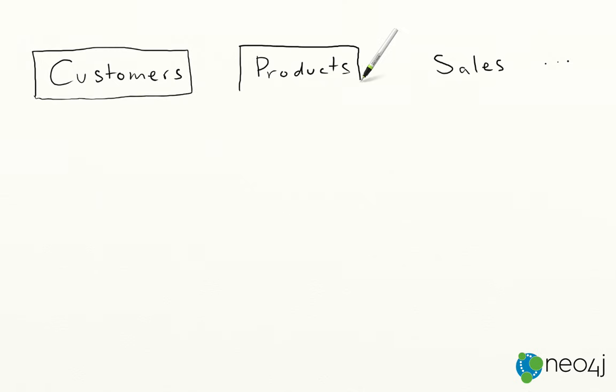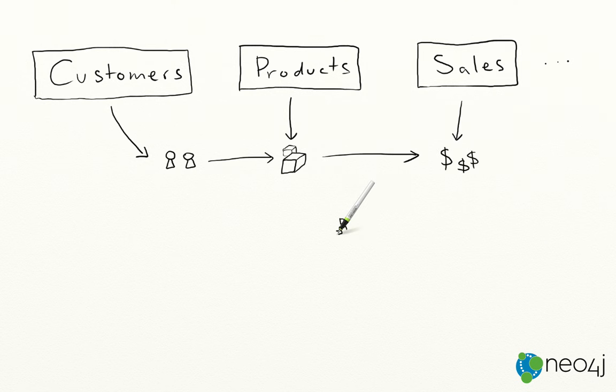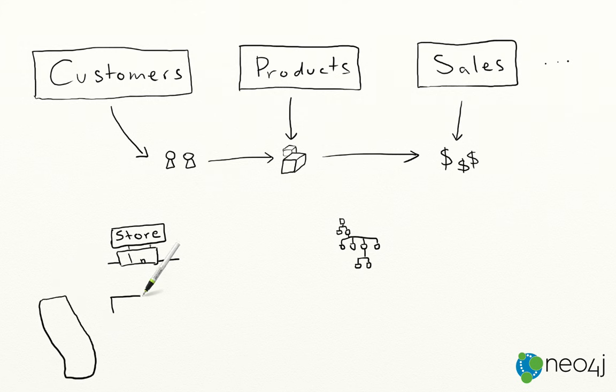This data is often kept separate in silos. If you think about it though, beyond customers, products, purchases, you have things like product categories, stores, regions, and much more. And it turns out these things are all related, directly but also indirectly through each other.